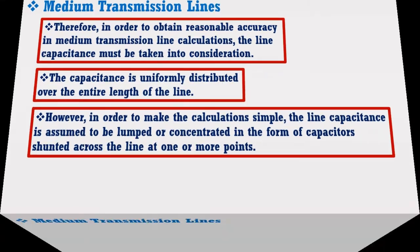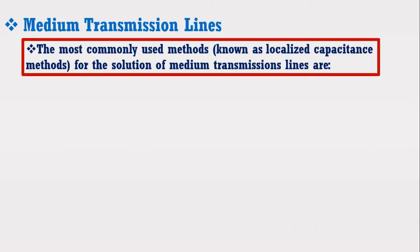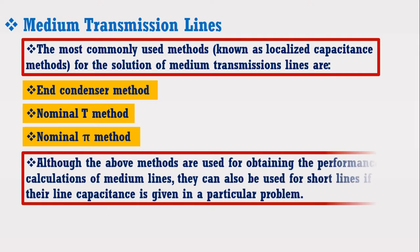The most commonly used methods for the solution of medium transmission line are: 1. End condenser method. 2. Nominal T method. 3. Nominal pi method. Although the above methods are used for obtaining the performance calculation of medium lines, they can also be used for short lines if their line capacitance is given in a particular problem.